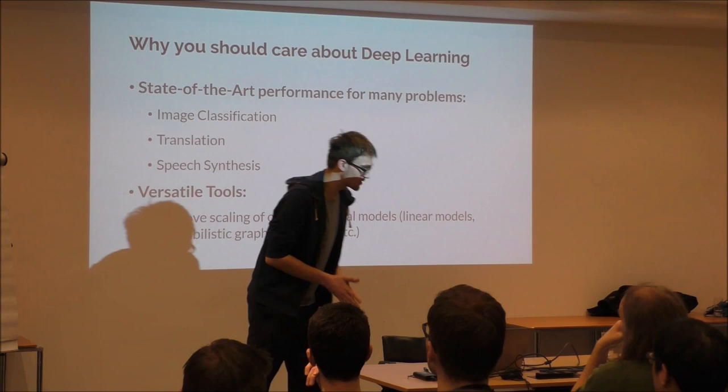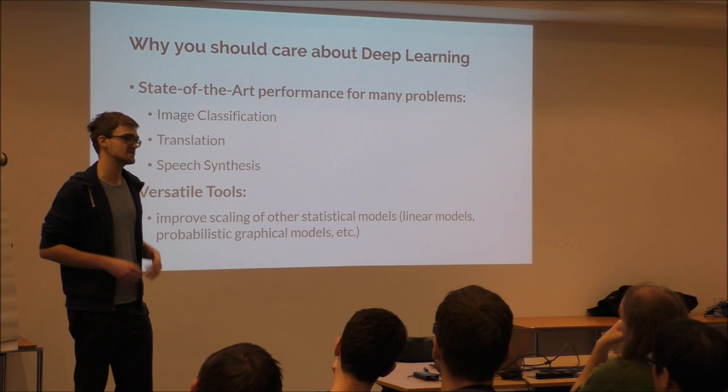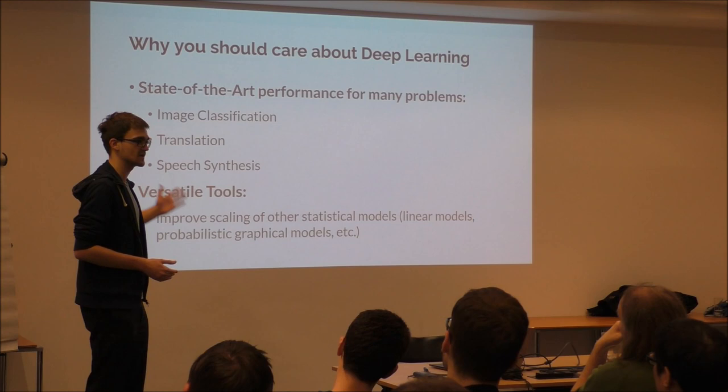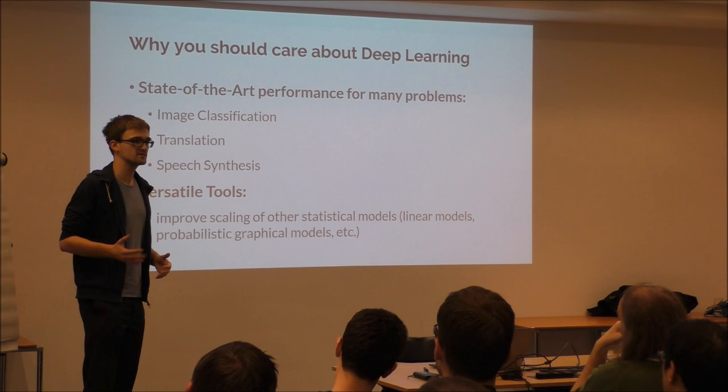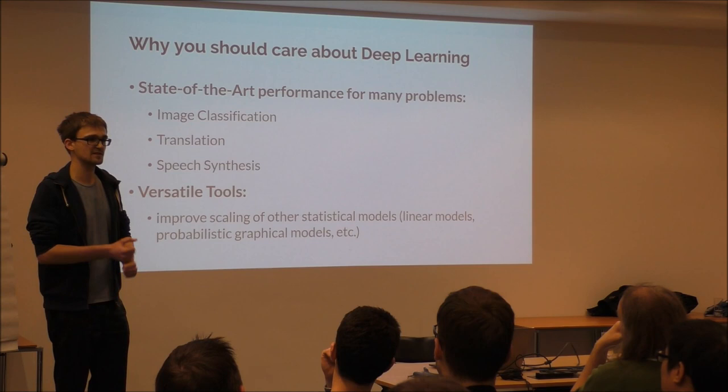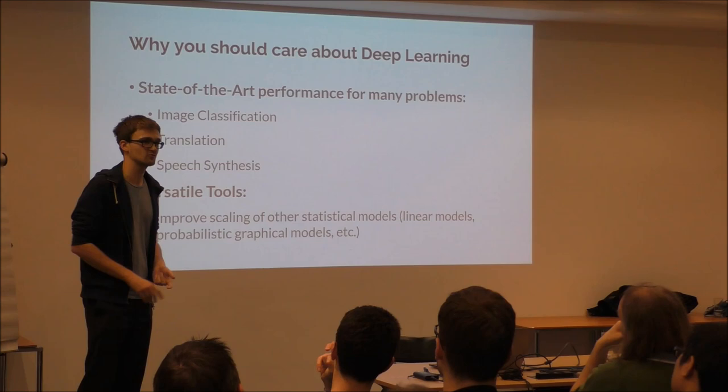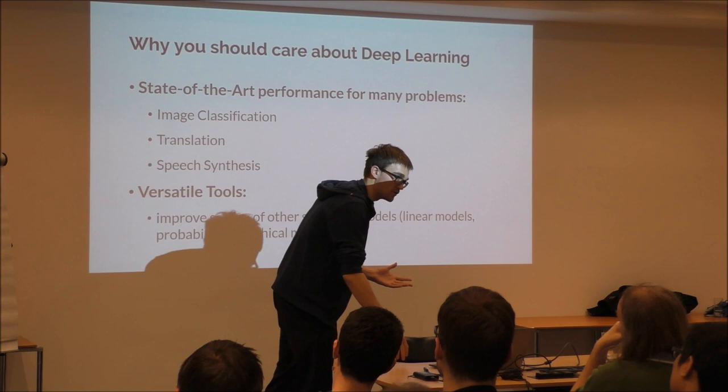So why should you care about deep learning? The main reason is that for many problems you basically have to use deep learning to be competitive. Everything that involves images — for example image classification, translation, and speech synthesis. The second important reason is that the tools are versatile and you can use them for many different things. You can make your existing statistical models faster with very large linear models, do inference from graphical models, particle simulations, and many other things that became possible through deep learning tools.